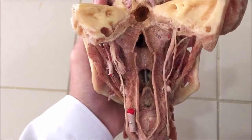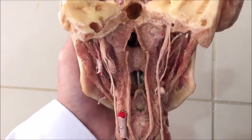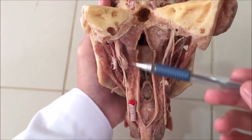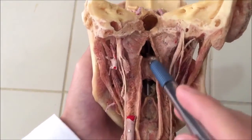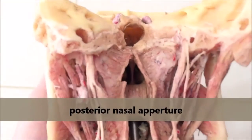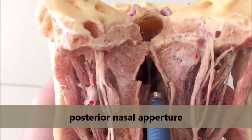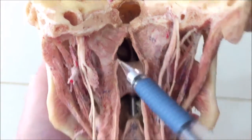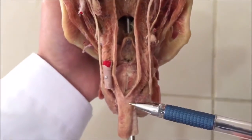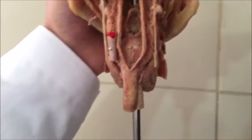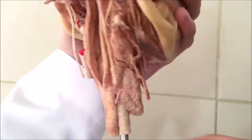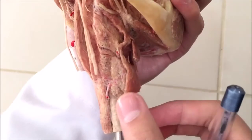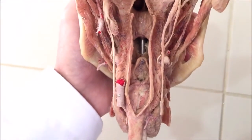Now looking at the pharynx on the plastinated model: this is the full pharynx, extending from the posterior nasal apertures — these are the posterior nasal apertures or the choanae — to the level of C6 where it becomes the esophagus. This is the esophagus, this is the trachea, and this is the thyroid gland.